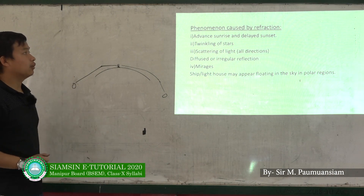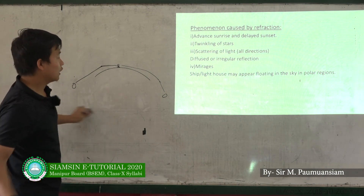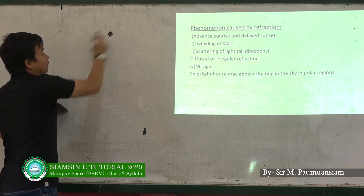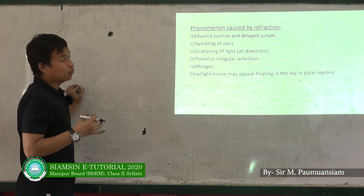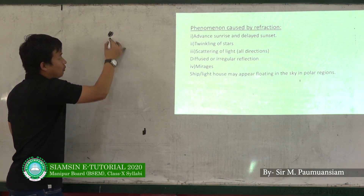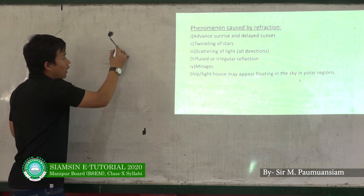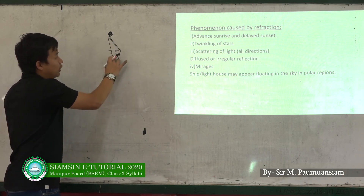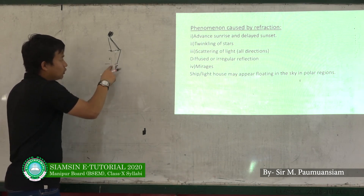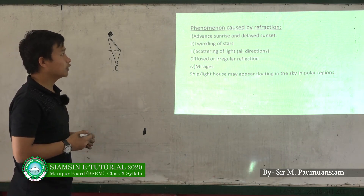The second phenomenon is the twinkling of stars — as in 'Twinkle Twinkle Little Star.' Stars appear to twinkle because their light passes through the atmosphere. The atmosphere has layers of air with different refractive indices, causing the refracted light to shift continuously.